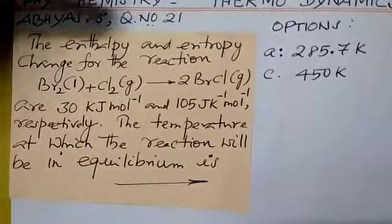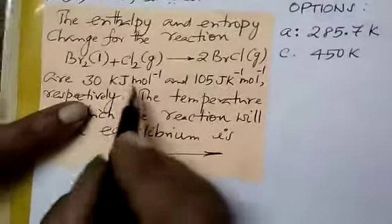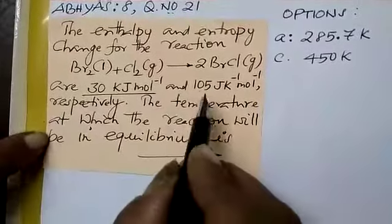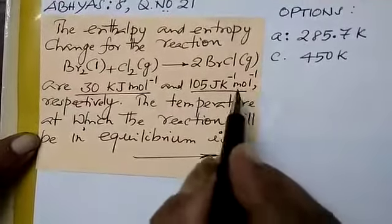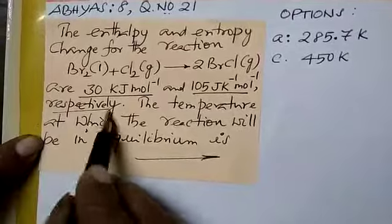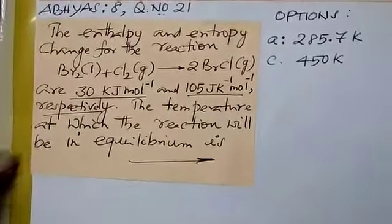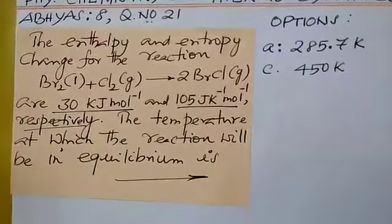The enthalpy and entropy change for the reaction are 30 kilojoules per mole and 105 joules per Kelvin per mole respectively. The temperature at which the reaction will be in equilibrium is repeatedly asked.